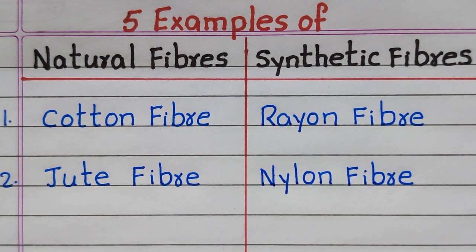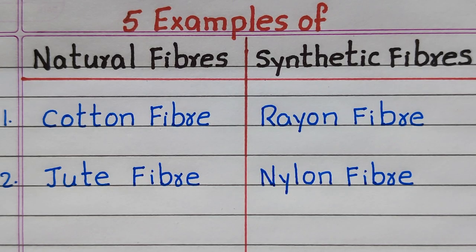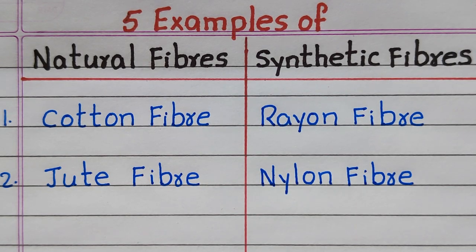The first example of natural fiber is cotton fiber, second jute fiber. First example of synthetic fiber is rayon fiber, second nylon fiber.